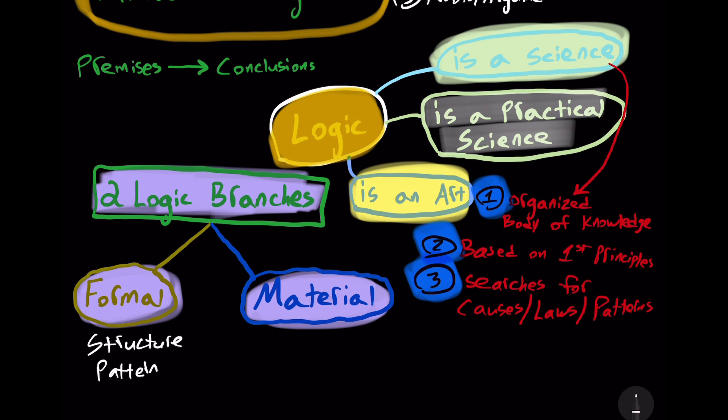Material logic is about argumentation as it occurs in daily life. It deals with argumentation in the concrete, not in a purely formal abstract way. For example, all men are mortal, no angels are mortal, therefore no angels are men.